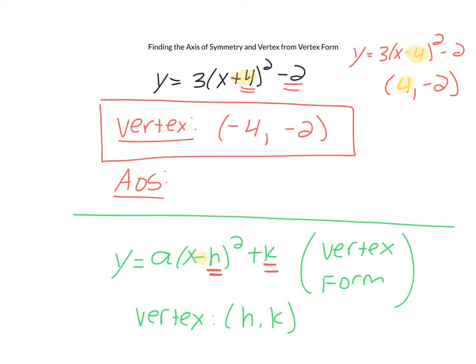The axis of symmetry is simply the x value of the vertex. It's this number negative 4 right here. So the axis of symmetry is going to be the line x equals negative 4. And that's how you find the AOS and the vertex of a quadratic in vertex form.